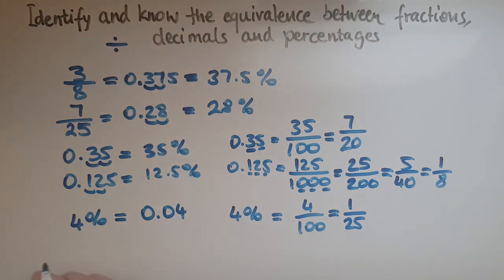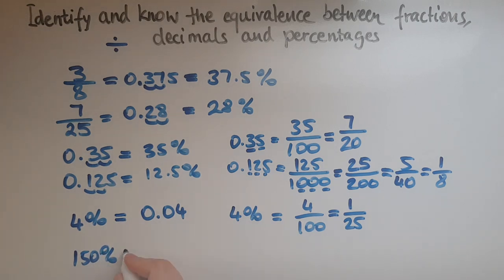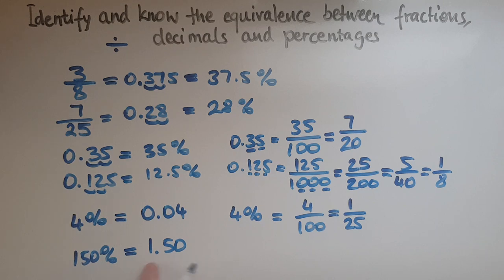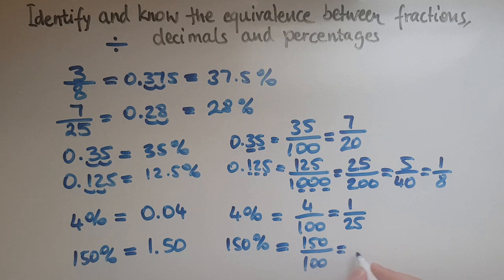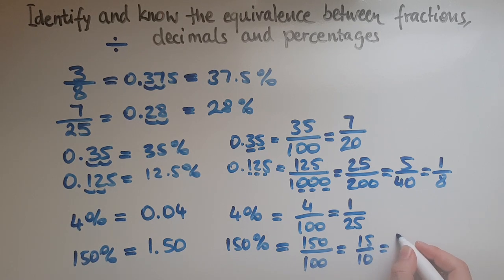Let's try 150 percent — that's an increase of 50 percent on top of 100 percent, like 150 pence. Written with money notation that's 1.50 or just 1.5 as a decimal. As a fraction, 150 percent means 150 out of 100. Dividing both by 10 gives 15 over 10, and then dividing by 5 gives 3 over 2. So three over two is the fraction representing 150 percent.